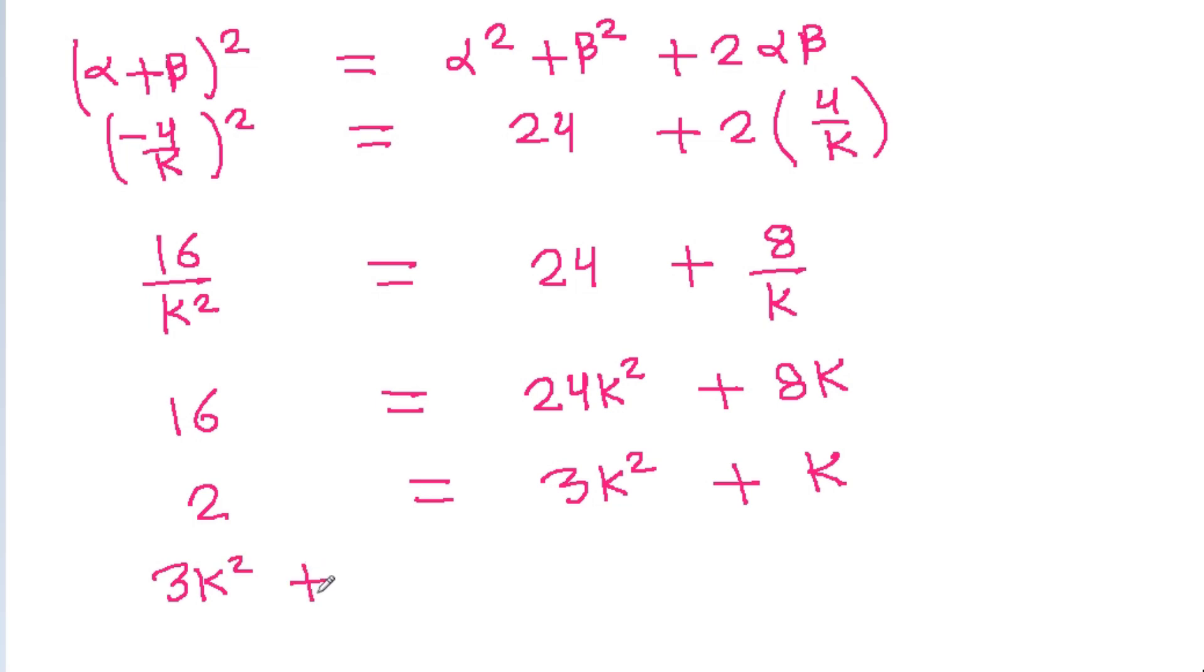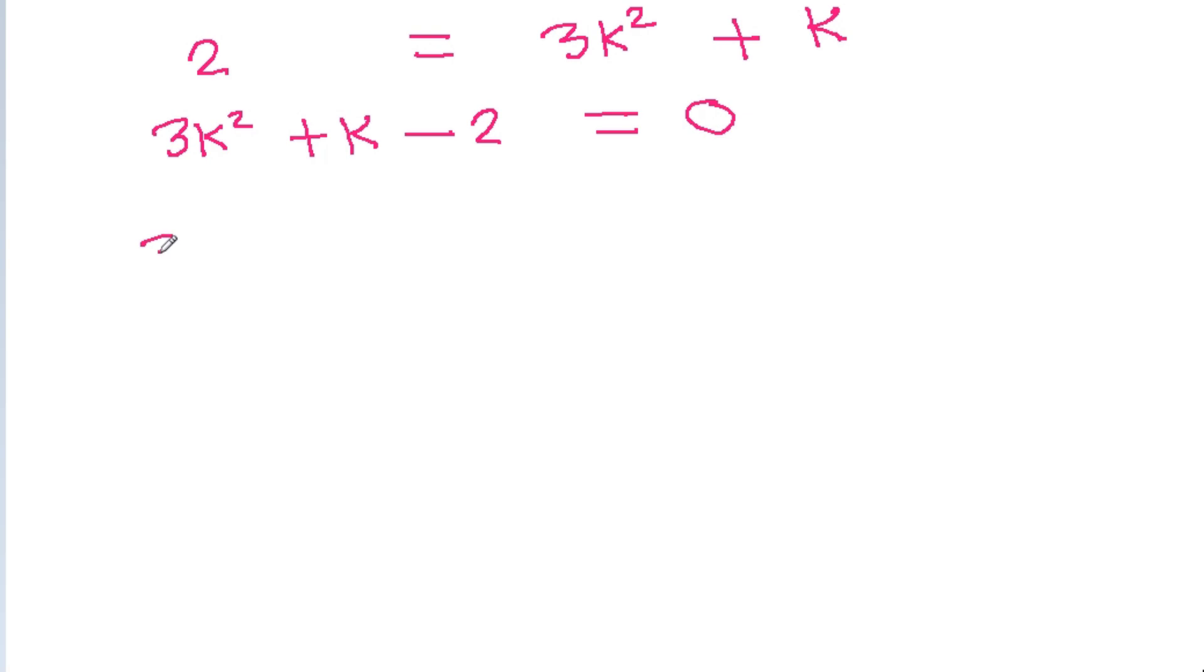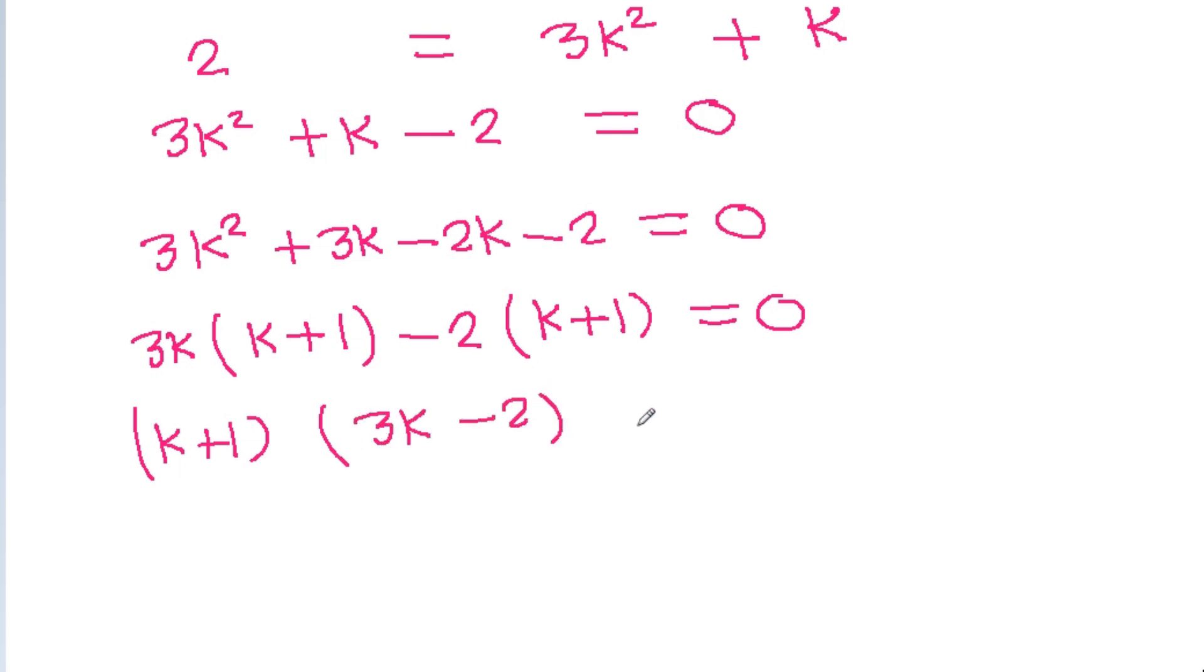So 3k² + k - 2 = 0. This becomes 3k² + 3k - 2k - 2 = 0. We can take 3k common to get 3k(k+1), and here we can take -2 common to get -2(k+1). Now if we take (k+1) common, then we get (k+1)(3k-2) = 0.